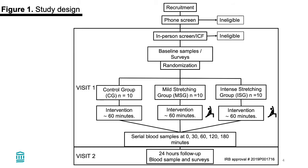Those randomized to the stretching groups experienced an individual one-on-one yoga stretching session with the same sequence of stretching postures for 60 minutes, in the same room, around the same time, with the same props, wearing an H10 Polar heart rate monitor on their chest, and each session was video recorded after their approval. Upon the end of the intervention, participants moved to a proceeding room where nurses performed serial blood collection. Participants were then invited to return the next day for one short questionnaire and one more blood draw.